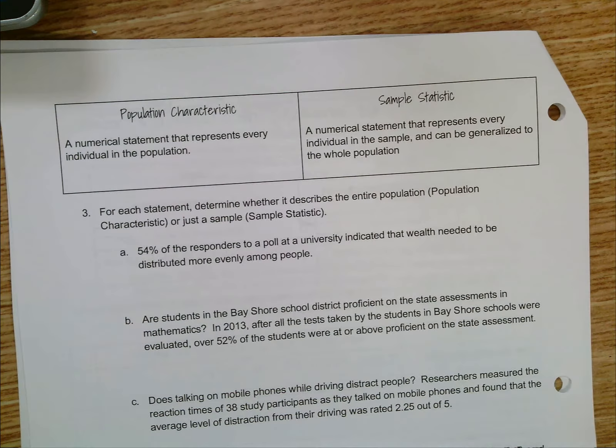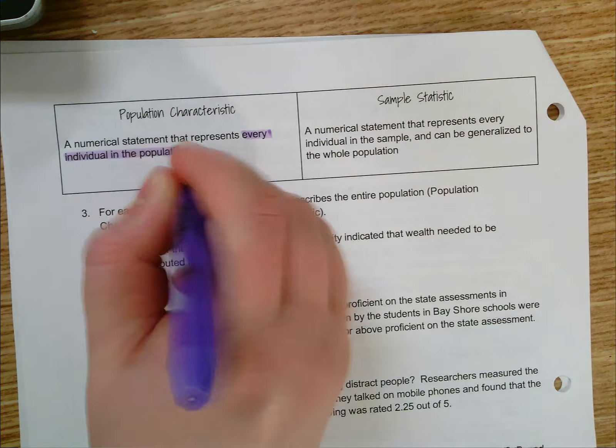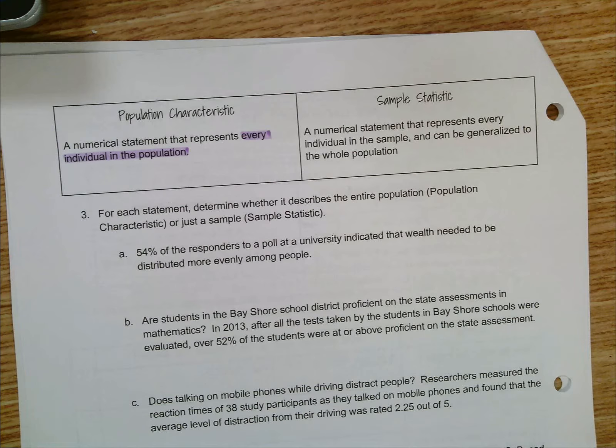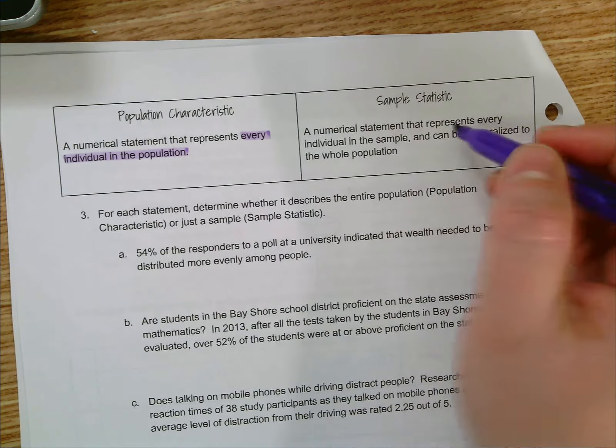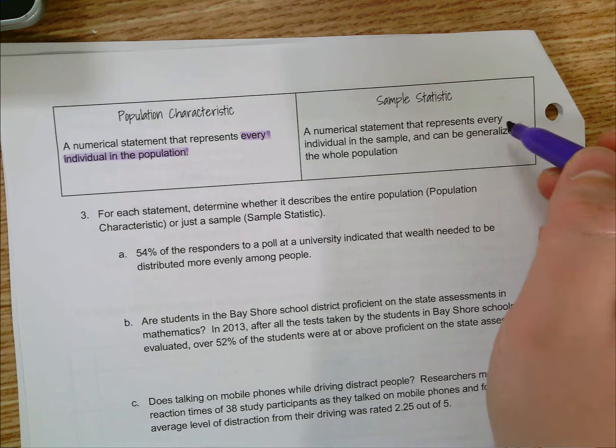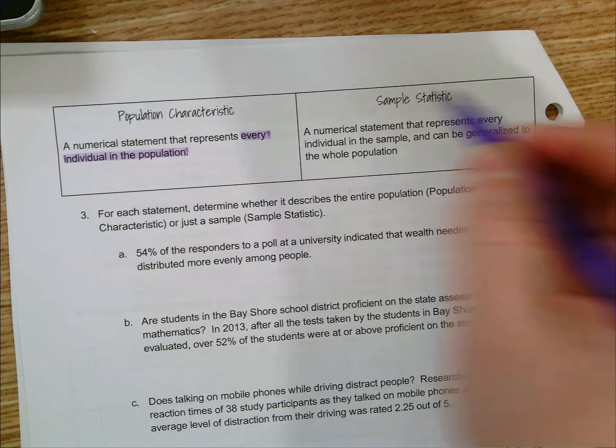is a numerical statement that represents every individual in the population, whereas a sample statistic is a statement that represents every individual in the sample and can be generalized to the whole population.